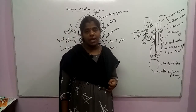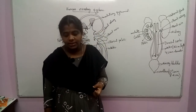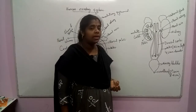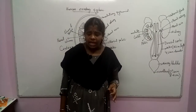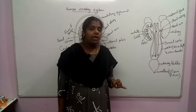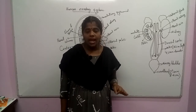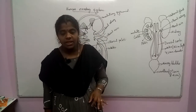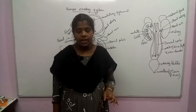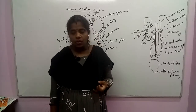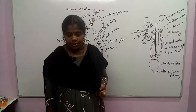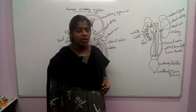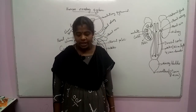The width is 5 to 7 centimetres and the thickness is 2 to 3 centimetres. The length is 10 to 12 centimetres, width is 5 to 7 centimetres, and thickness is 2 to 3 centimetres. The kidney weighs around 120 to 170 grams.